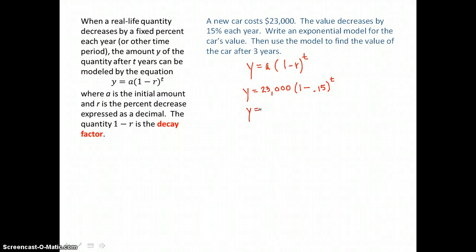So now I would simplify this model that we wrote by subtracting and getting our b value of 0.85 raised to the t power. Now here's our model that they wanted us to write for this vehicle that cost $23,000 in the beginning. You can see that our base is between 0 and 1, and that's going to cause exponential decay. So over time, this vehicle is going to lose values. It won't be $23,000 in 3 years.